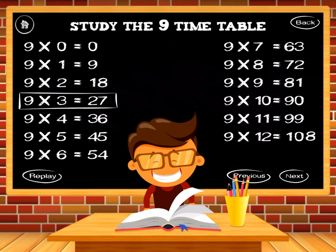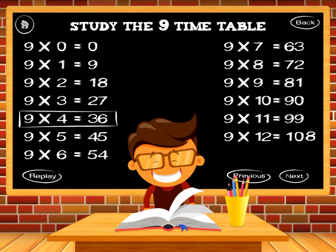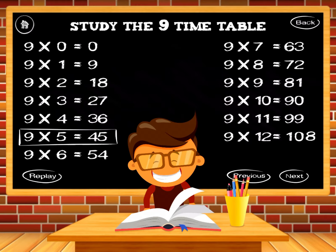9 times 3 equals 27. 9 times 4 equals 36. 9 times 5 equals 45.